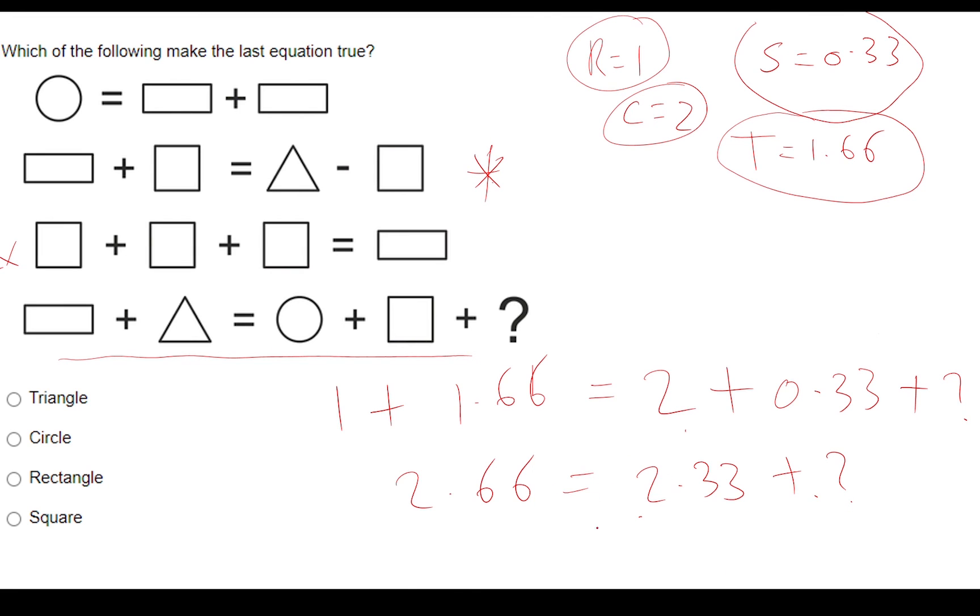So let's subtract 2.33 from 2.66 and we should get shape. And as we know our magic shape should be square because 0.33 equals to a square. So our answer is square.